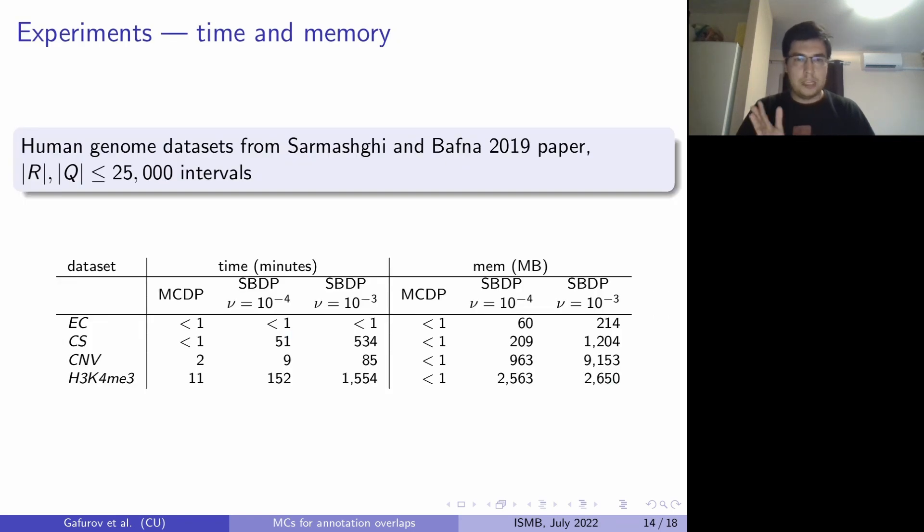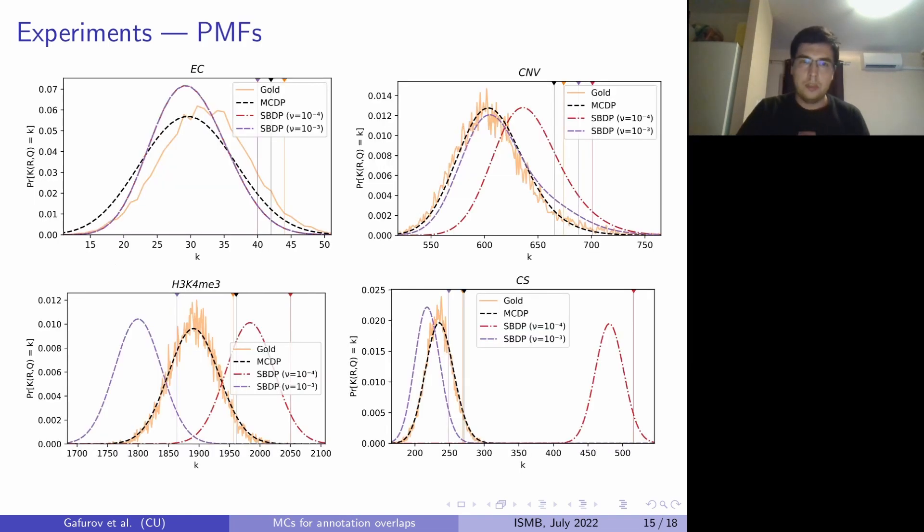So let's go to the experiments. First, we have taken the human genome datasets from the original Sarmashki-Bafna paper. And you can see that we take only a couple of minutes to compute the p-values while they take tens or even hundreds or thousands of minutes. And at the same time, we take almost no memory whereas they have to use up to several gigabytes of memory. So we are not only theoretically, but also practically faster and more memory efficient than they are.